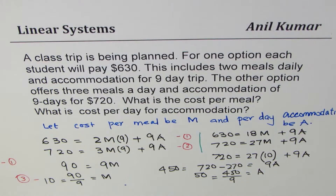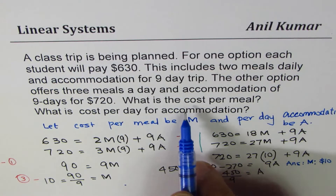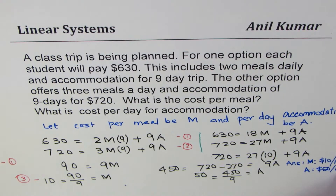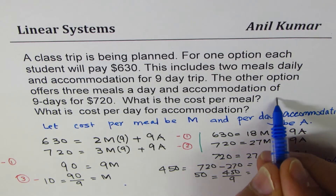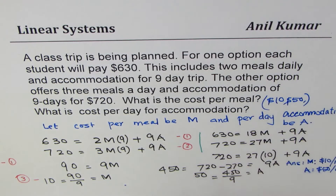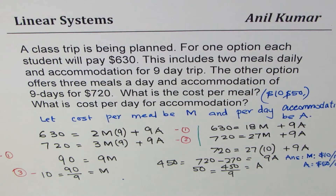It's a good idea to write the answer with units. Cost per meal: m = $10 per meal. Cost of accommodation: a = $50 per day. The answer is $10 per meal and $50 per day. That is how you can solve such a question. I'm Adil Kumar and I hope that helps.